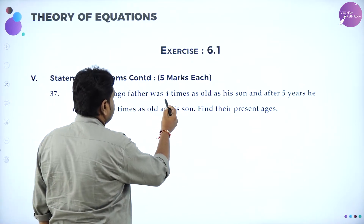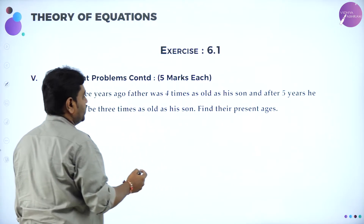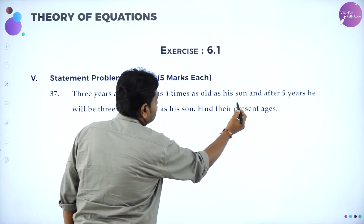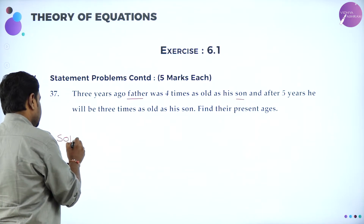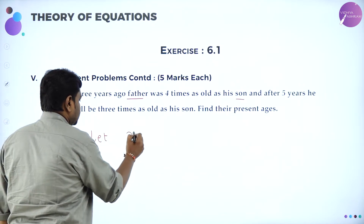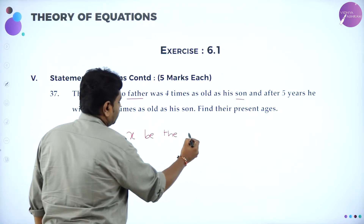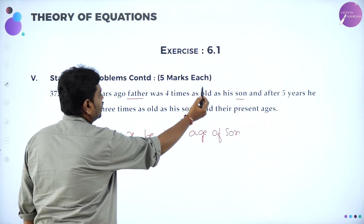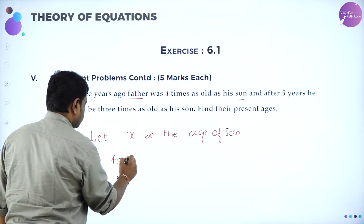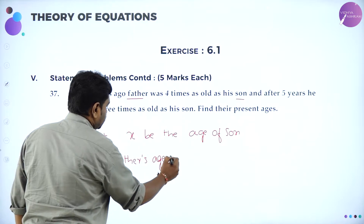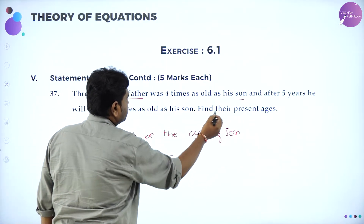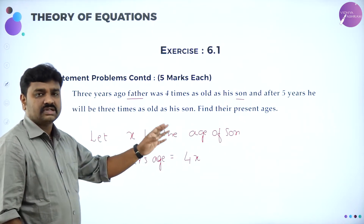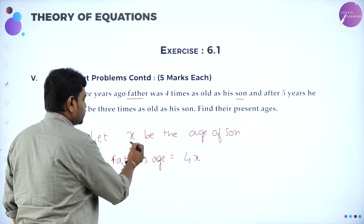3 years ago, father was 4 times as old as his son. After 5 years, he will be 3 times as old as his son. Find their present ages. Now, they are comparing father's age with son's age, so let x be the present age of son. Father's age is 4 times son's age, so father's present age is 4x.